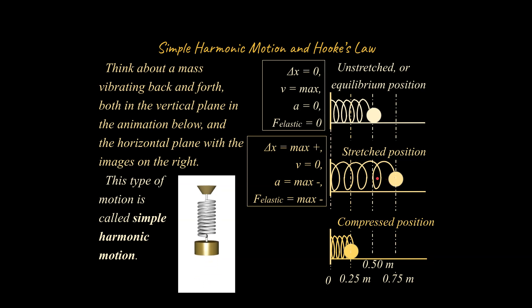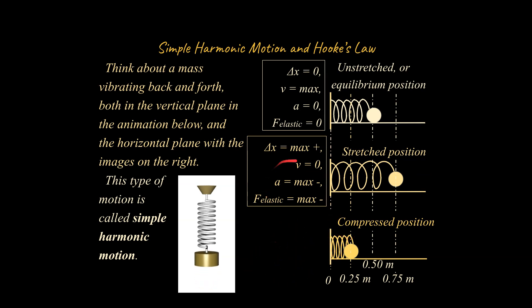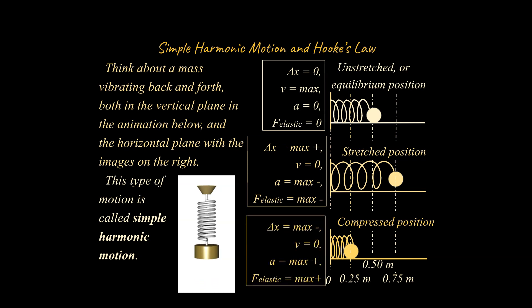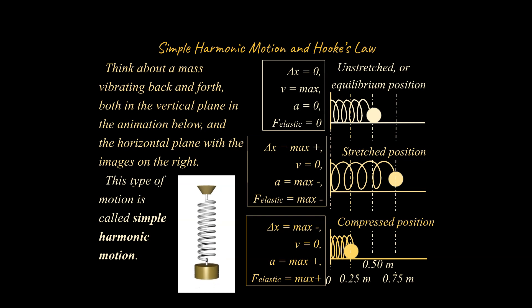That restoring force is at maximum value to the left — we'll call that a maximum negative value, assuming left is negative and right is positive. Now think about the compressed position: what are Δx, v, a, and F_elastic? Take a moment to try this on your own. In the compressed position, Δx is most negative (fully compressed). For a brief moment velocity is zero. Acceleration is at a maximum positive value to the right, and the elastic force is also to the right — opposite the displacement.